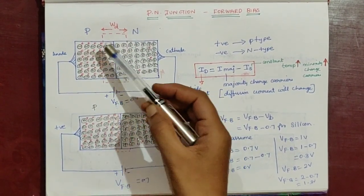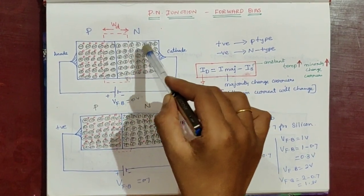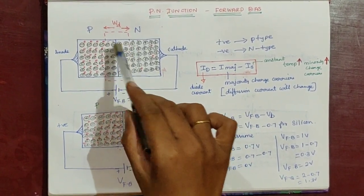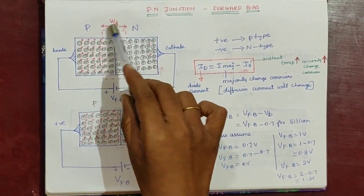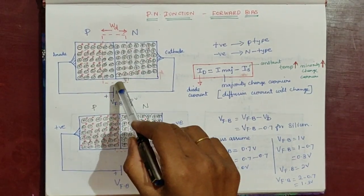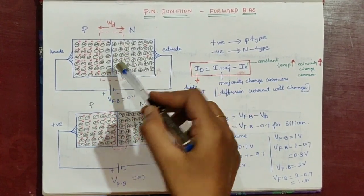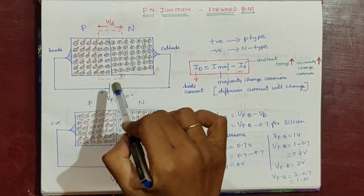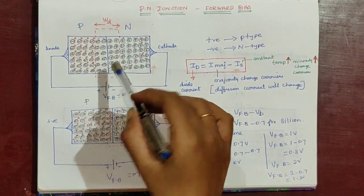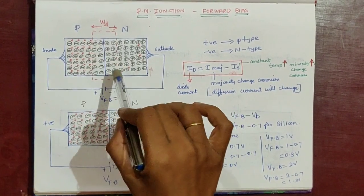This depletion region contains immobile ions. In P-type, the majority charge carriers are holes and minority charge carriers are electrons. In N-type, the majority charge carriers are electrons and minority charge carriers are holes. The depletion region has a width WD. At no bias condition, the depletion region forms a barrier voltage — also called built-in voltage — which prevents the majority charge carriers from flowing. The depletion region depletes further movement of majority charge carriers, which is why we call it the depletion region.